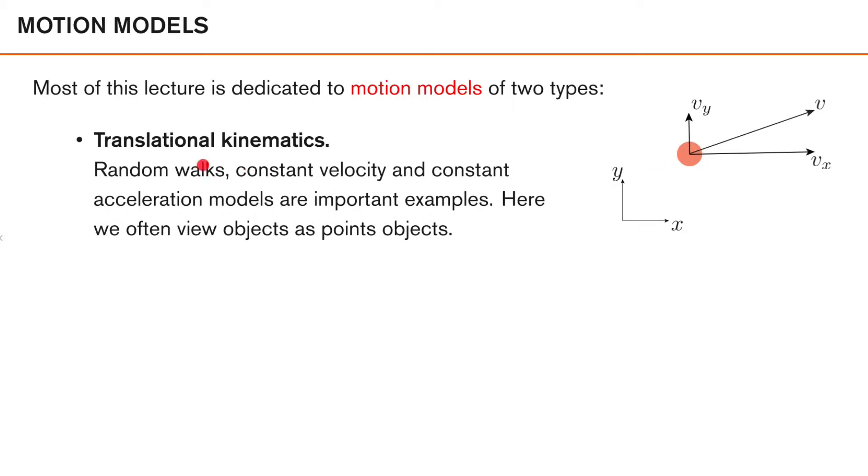So we have seen examples of this already, namely the random walk, but we will also look at the constant velocity and the constant acceleration models. Now, these models are often fairly simple and general, which has the advantage of making our filters less complex. On the other hand, they are limited in the type of motion that they are able to express. So in many cases, we could probably do better.